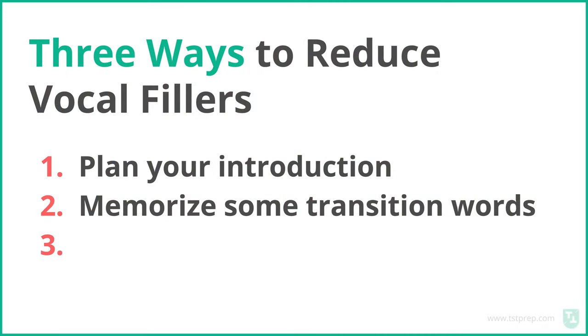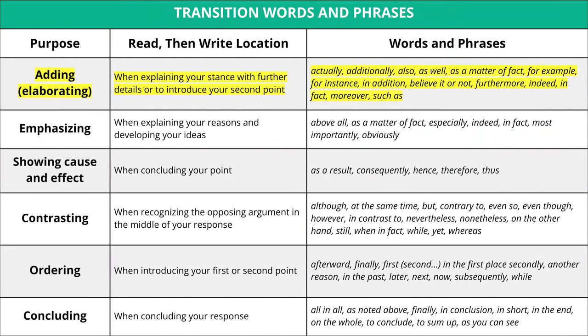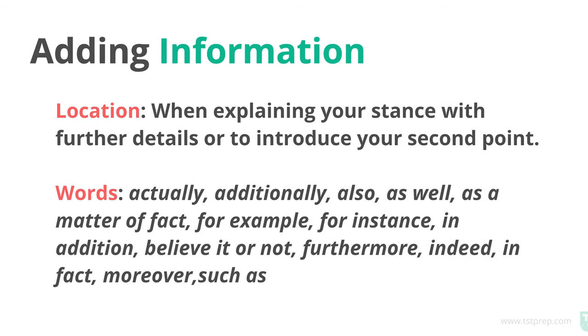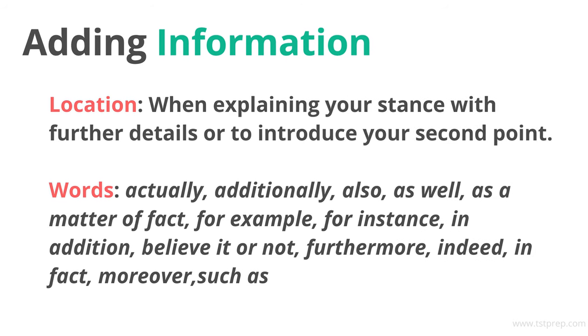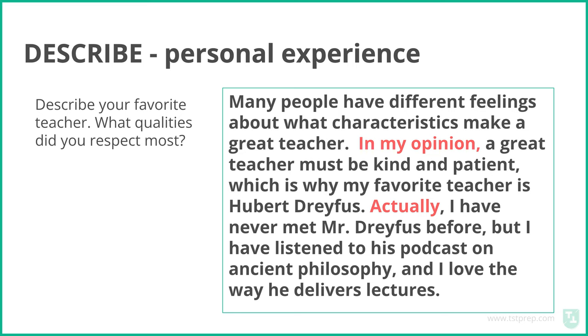The second way to avoid vocal fillers is to memorize some transition words. For example, you'll notice that I say 'so, for example' a lot — that's a transition phrase. There are many different transition words for different purposes. Words like 'also,' 'actually,' 'additionally,' 'as well' help you add information, and if you know these, you can use them instead of saying 'uh' or 'um.' For example, instead of saying 'uh, a great teacher um is kind and patient,' say 'in my opinion, a great teacher must be kind and patient.' These transition words are like automatic — you don't have to think about them.